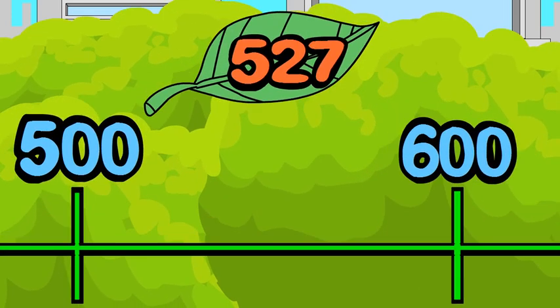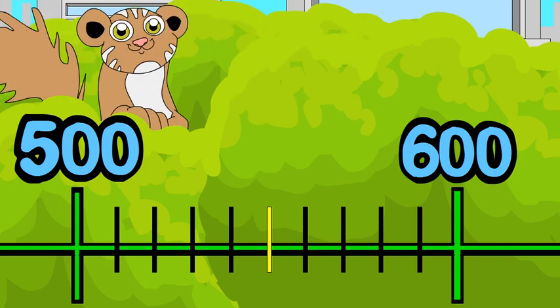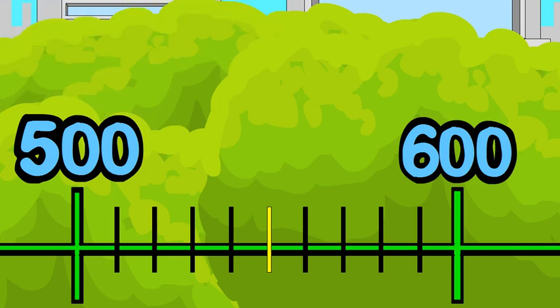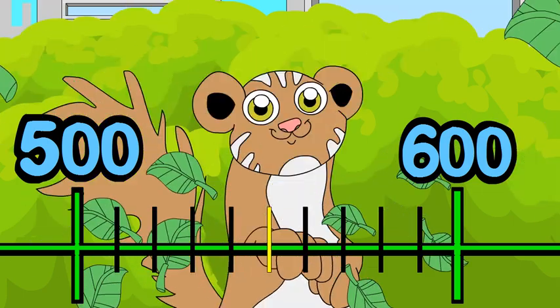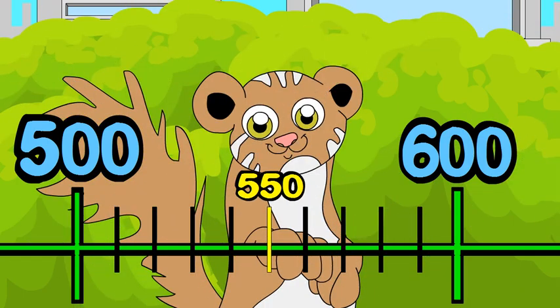Now you can set up a number line and mark your benchmarks. Step two: find the midpoint between 500 and 600 — that's the number exactly in the middle. The midpoint is 550.